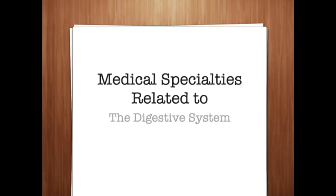Did any of that sound interesting? Maybe these medical specialties will interest you. A dentist holds a doctor of dental surgery or doctor of medical dentistry degree and specializes in diseases and disorders of teeth and tissues of the oral cavity. A gastroenterologist specializes in diseases and disorders of the stomach and intestines. An internist specializes in diseases and disorders of the internal organs. An orthodontist is a dental specialist in the prevention or correction of abnormalities in tooth positioning and related facial structures. A periodontist is a dental specialist who prevents or treats disorders of the tissues surrounding the teeth. A proctologist specializes in disorders of the colon, rectum, and anus — 'proct' or 'procto' meaning anus and rectum, and '-ologist' meaning specialist.